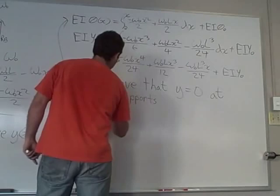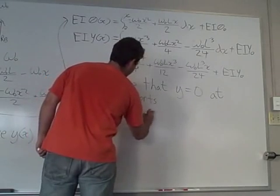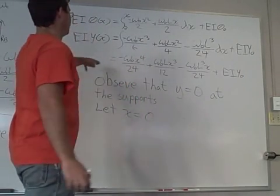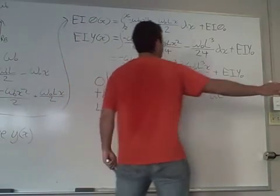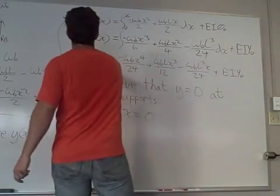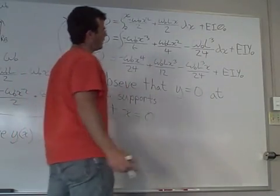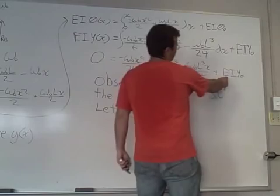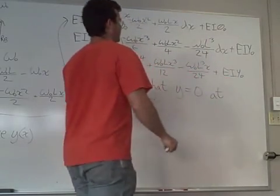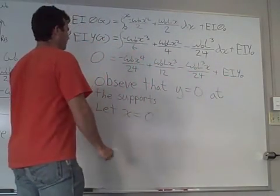And there's an X in every one of our terms. This is going to equal zero when X equals zero. And so our constant of integration, our EIYO term equals zero.